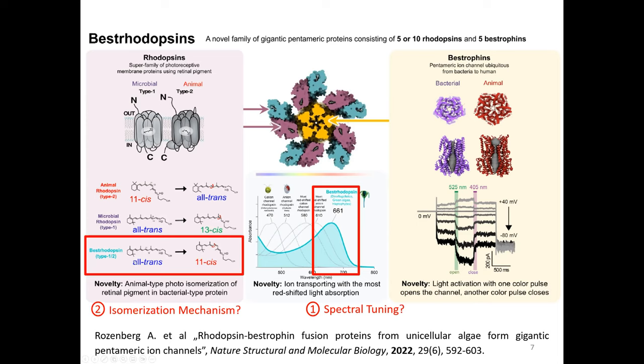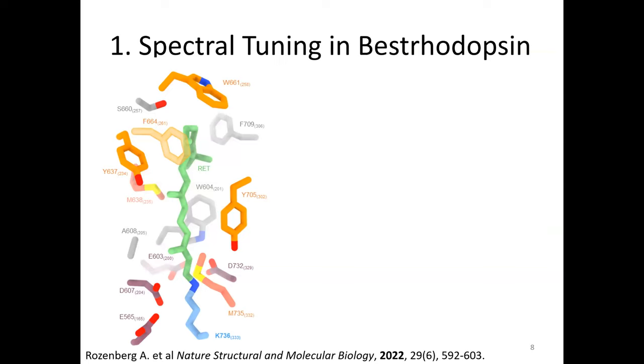The question is, how is it possible that the same chromophore in a different environment has such a strong shift in the absorption maximum? The second question is regarding the unusual isomerization mechanism. Usually animal rhodopsins isomerize from 11-cis to all-trans, microbial go from all-trans to 13-cis, but this new type starts with retinal in the all-trans conformation and converts it to 11-cis. It seems that it has a really unique mechanism and unique way to control the isomerization. I'm going to address these two questions in my presentation.